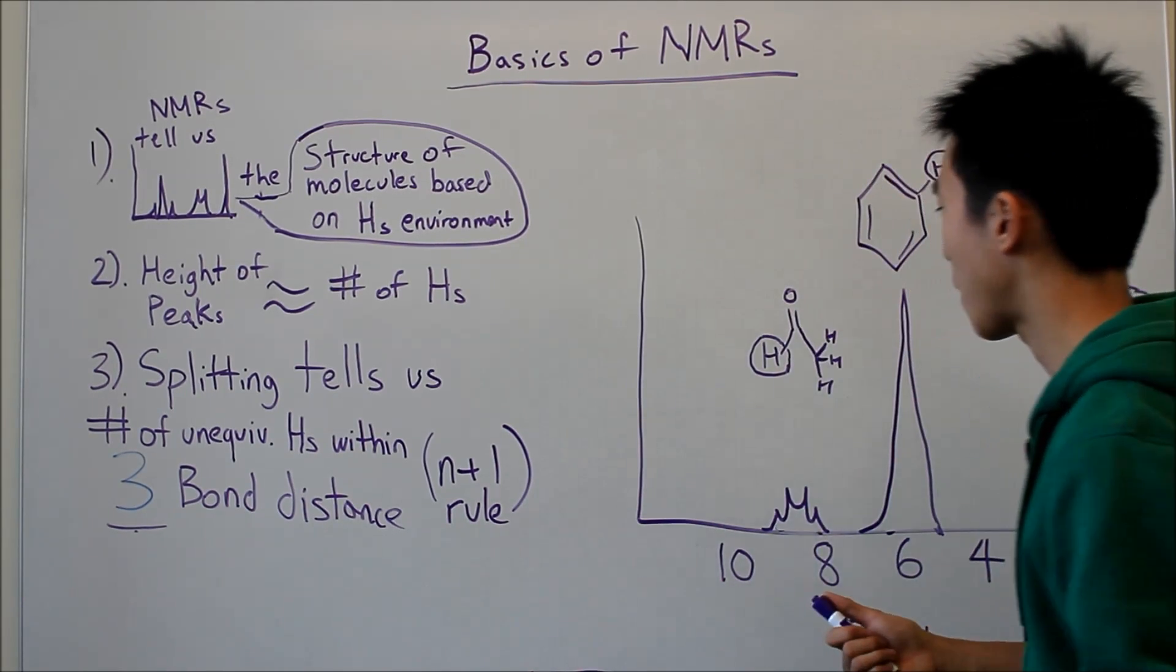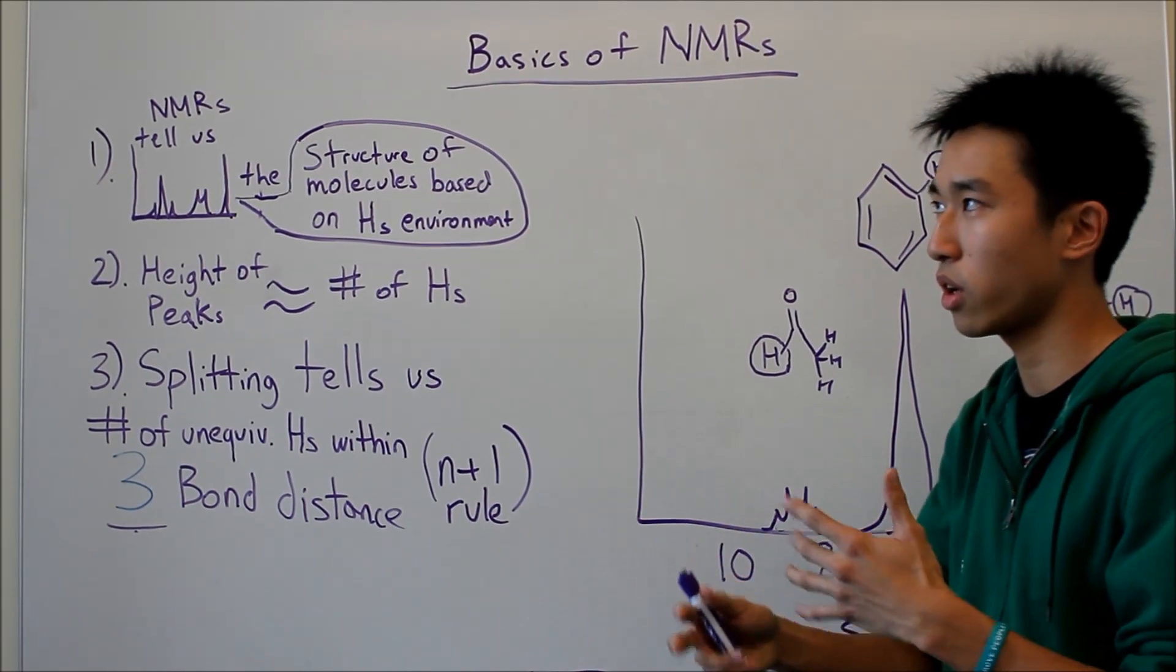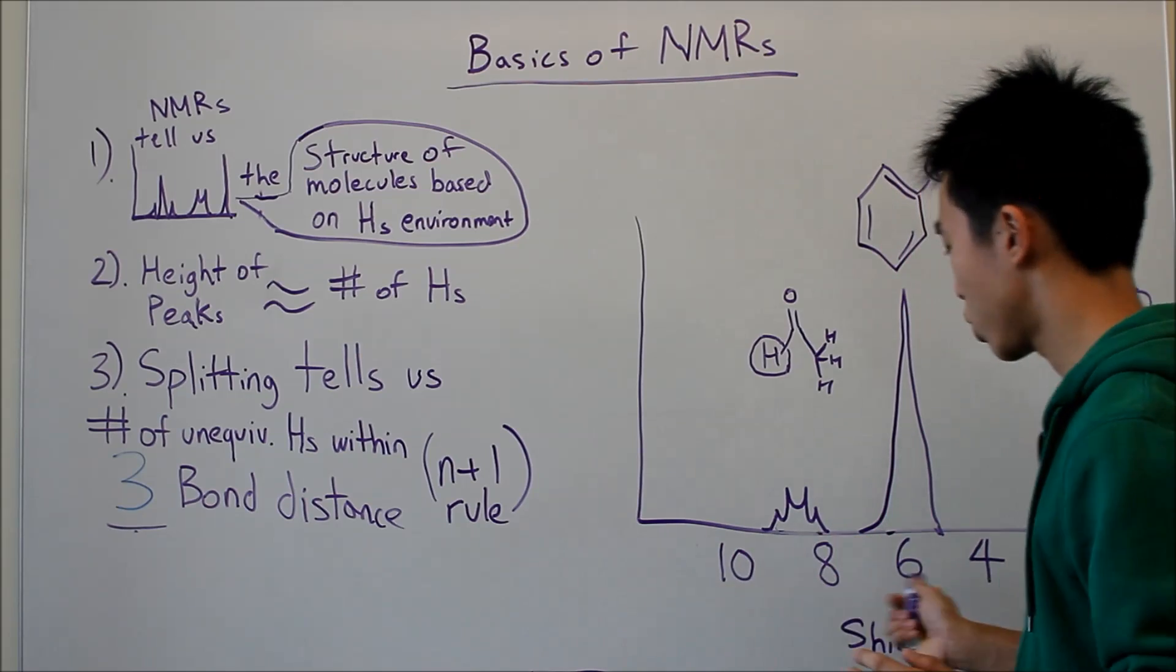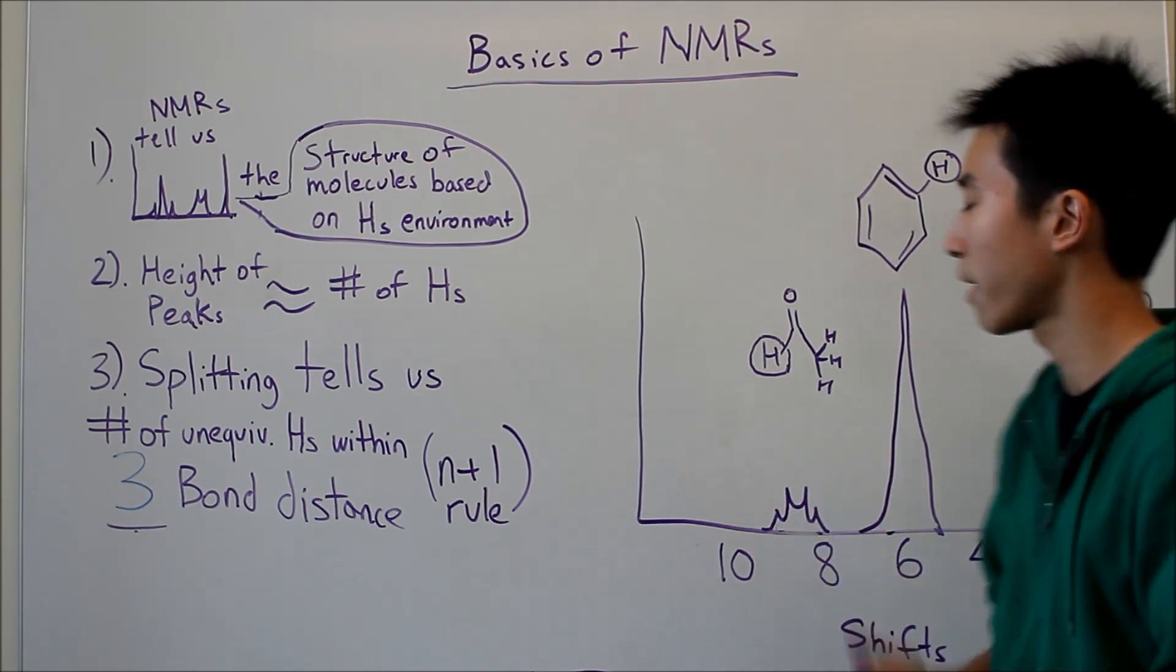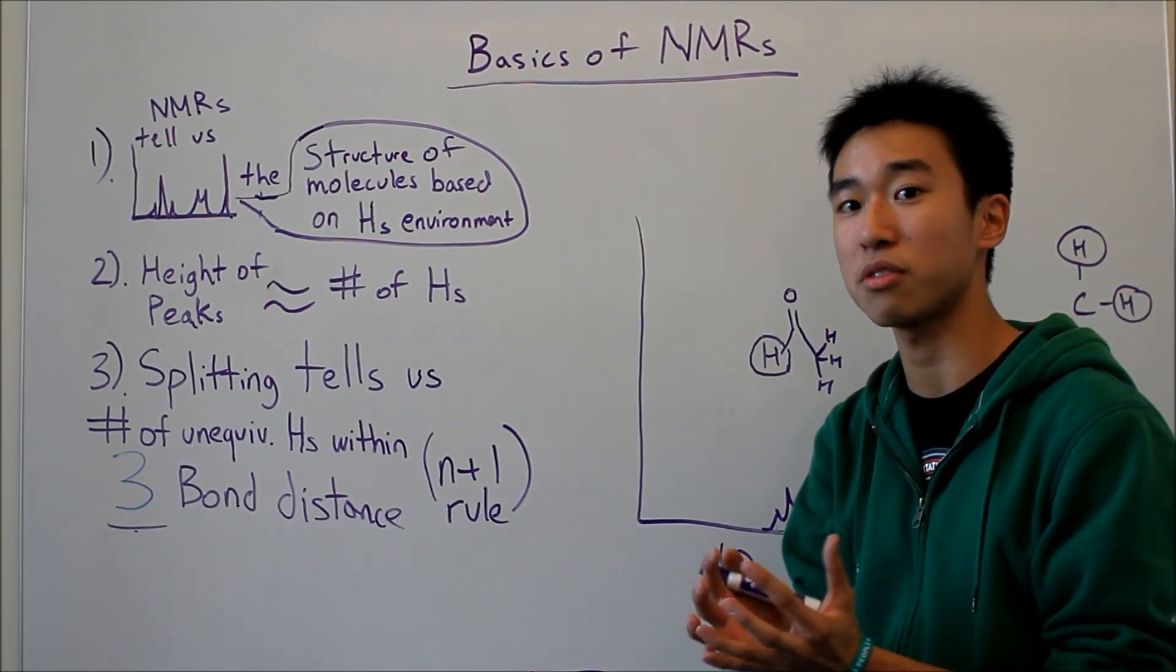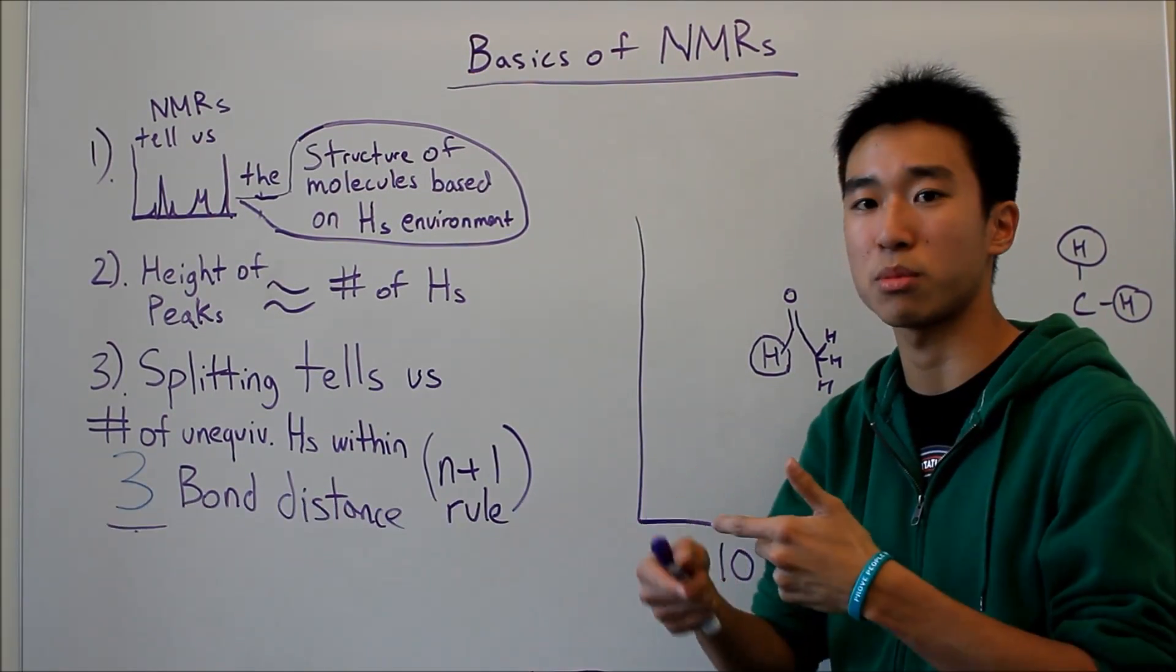So usually, like I talked about before, if there's more electrons, it's going to shield the protons more, preventing them from shifting more. So depending on how dense the electron field is around the proton itself, it can protect the proton from shifting.